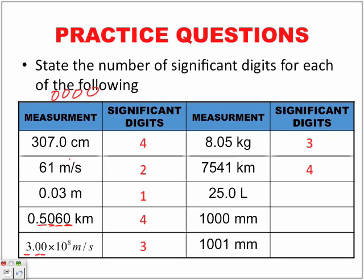Next one, 25.0 liters. Here is that .0 part again. Do I need this? No, I don't. 25 or 25.0 is still the same, which means I am making this zero significant. So in other words, I have a total of three significant digits.